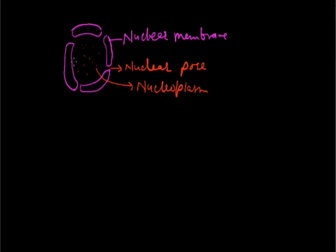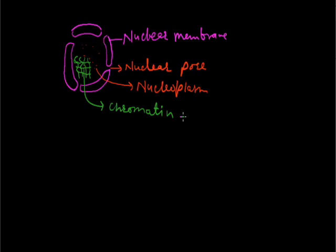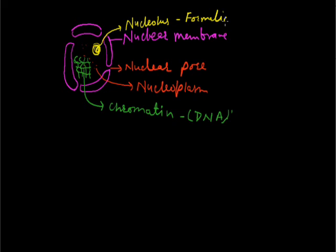Another component is the chromatin material — a thread-like structure made up of chromosomes arranged in a highly coiled structure. This chromatin material contains DNA, and these DNA molecules are responsible for hereditary information transfer from one generation to another. Another membrane-less structure present in the nucleus is the nucleolus, which is responsible for the formation of ribosomes. So the nucleolus is known as the ribosome factory.